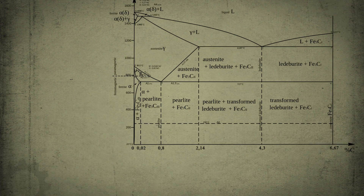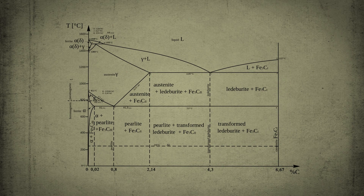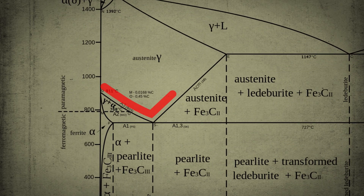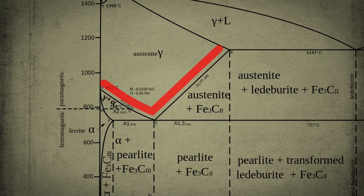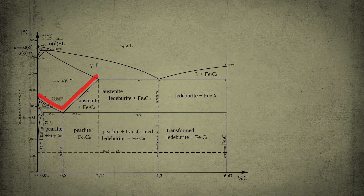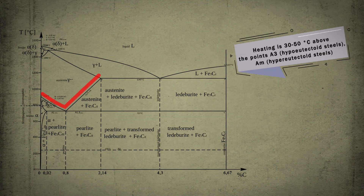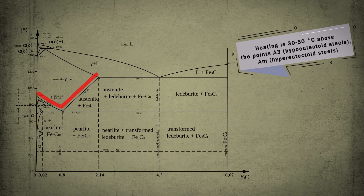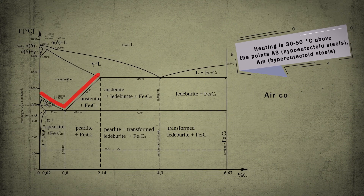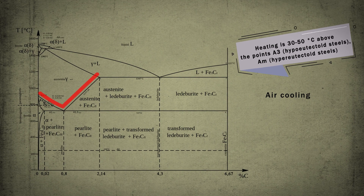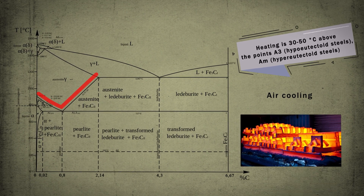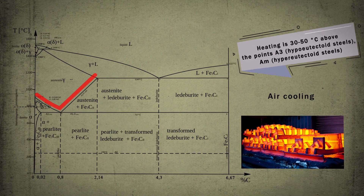Normalizing is accomplished by heating the steel at least 30-50 degrees above the GSE line. After sufficient time has been allowed for the alloy to transform at this temperature, it is cooled in still air.